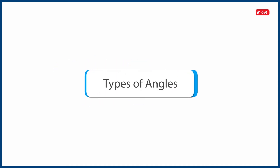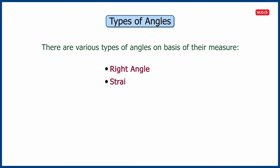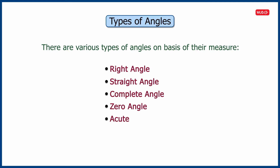Dear children, in this video we will learn about types of angles. There are various types of angles on the basis of their measure, like right angle, straight angle, complete angle, zero angle, acute angle, obtuse angle, and reflex angle.